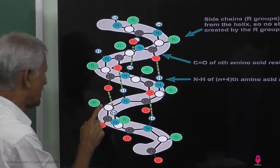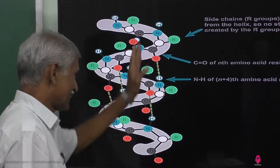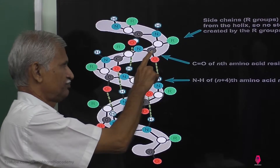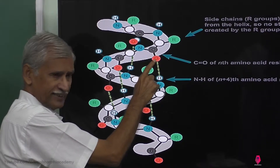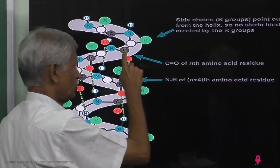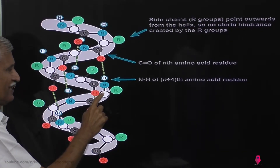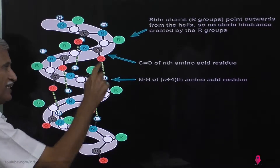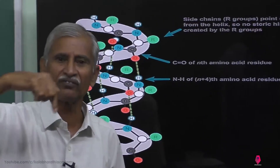In the helical structure, this is the R group. So it is not disturbing the making of this helical structure. This carbonyl group, this carbon atom with oxygen double bonding — C=O of amino acid residue — combines with the hydrogen of one amine group of the fourth amino acid. This is the combination of hydrogen bonding. This is the fourth-line bonding. There, a helical structure forms.